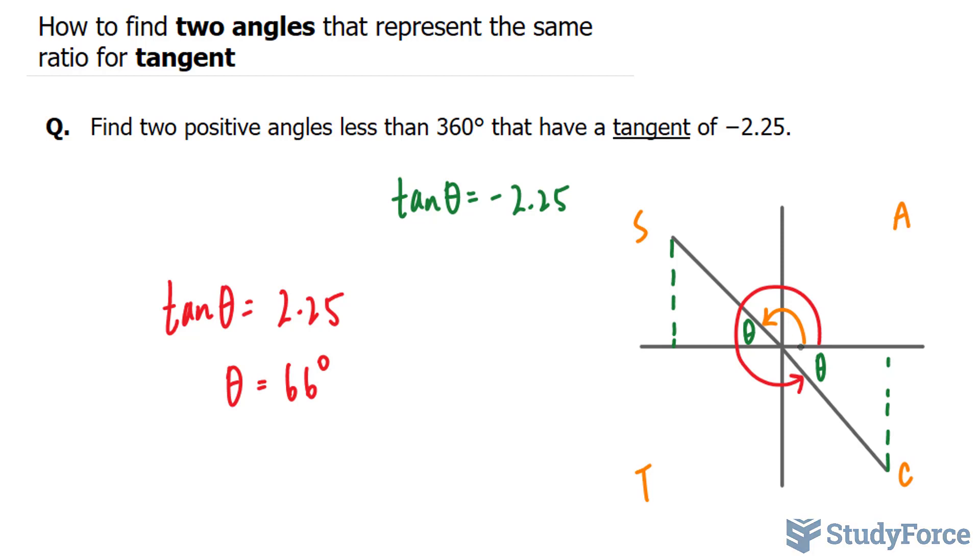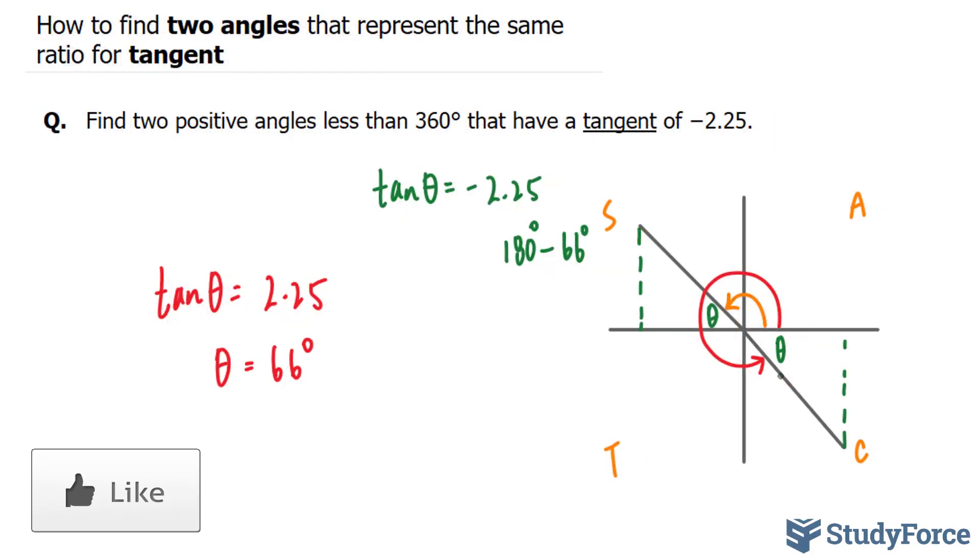How do we find the angle itself? Well, if it's in the second quadrant, you take your reference angle and you subtract it from 180. And if it's in the fourth quadrant, you will subtract your reference angle from 360 degrees.